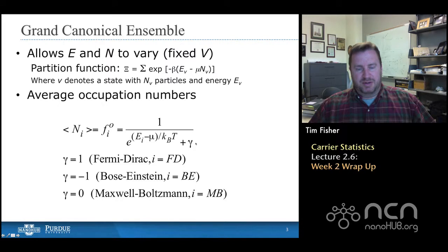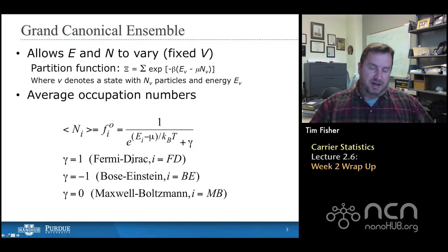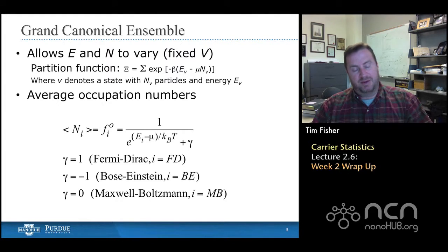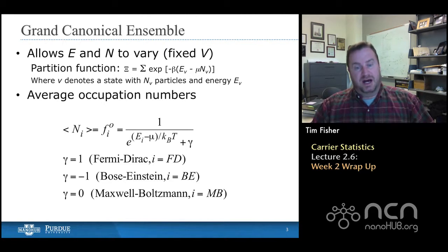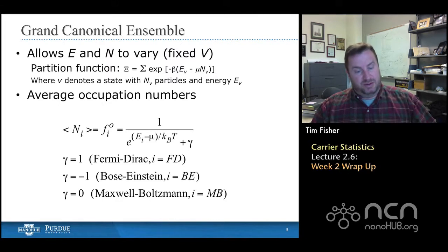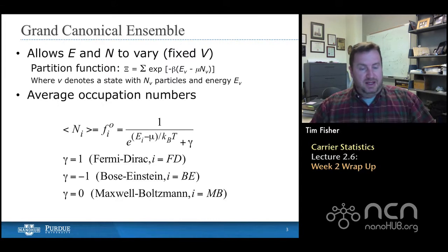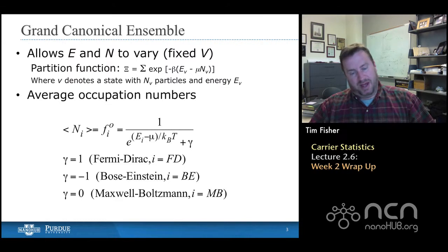If the gamma term in the denominator is 1, then we have Fermi-Dirac statistics, meaning the occupation number can be either 0 or 1 and its average is f. If gamma is minus 1, then we have Bose-Einstein statistics, which cover phonons and photons, where the number of particles in a given state is not prescribed to 0 or 1. When gamma equals 0, it's a classical Maxwell-Boltzmann distribution. We saw that for phonons, if our energies are high enough, the Bose-Einstein statistic converges to the Maxwell-Boltzmann statistic.